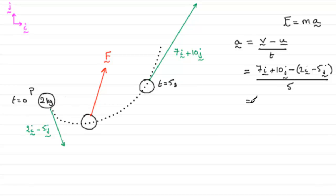So, if we clean this up, we've got 7i minus 2i, so that's going to be 5i. And then, we've got 10j here, minus minus 5j, so it's going to be 15j.